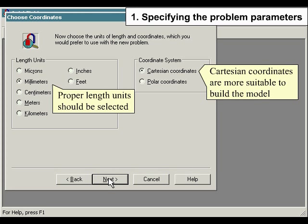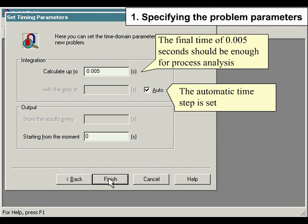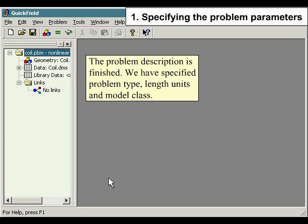Proper length units should be selected. Cartesian coordinates are more suitable to build the model. The final time of 0.005 seconds should be enough for process analysis. The automatic time step is set. The problem description is finished.